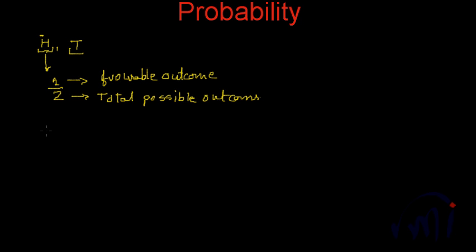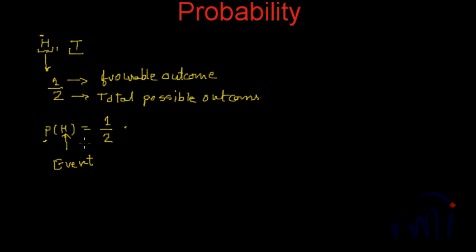So the probability of getting heads is actually equal to 1 out of 2. H is called an event, and P of H is the probability of happening this event. This is the fractional value which suggests how many times or what fraction of the total experiment or activity this result is possible.